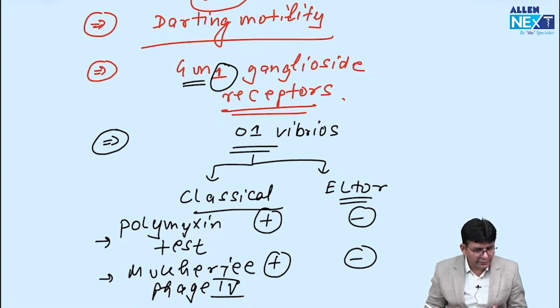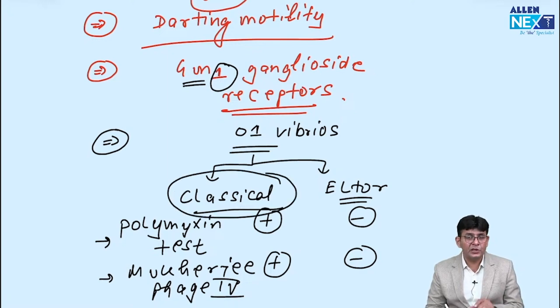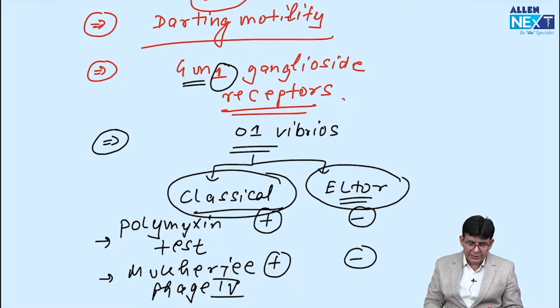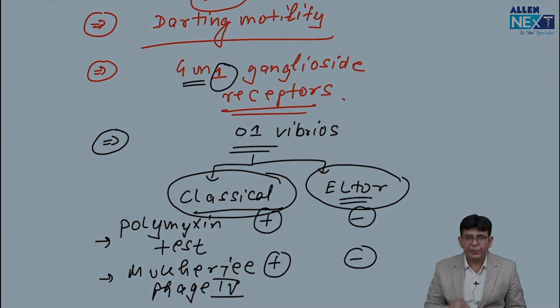Other than that, this question might come that most of the pandemics were done by which one? That is the classical one which causes severe infections. The classical one which causes like not so severe but it does this particular cholera episodes that is Eltor which is a more resistant type which have a chronicity. Eltor is having a chronicity. It is hard to kill. But the severe infections are done by the classical ones in which more water is being lost. So these are the important ones which you should know regarding the Vibrio.